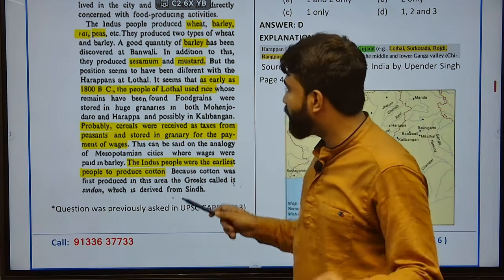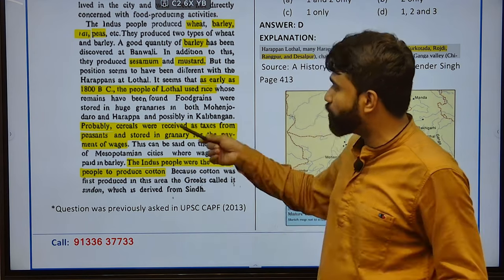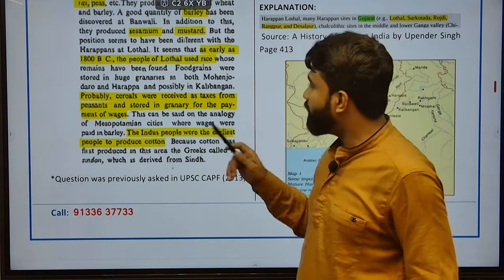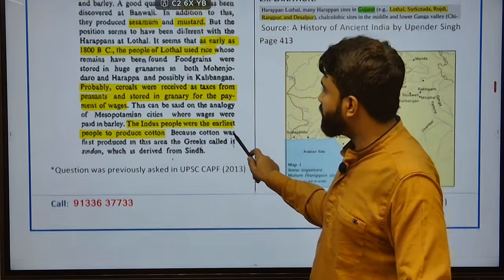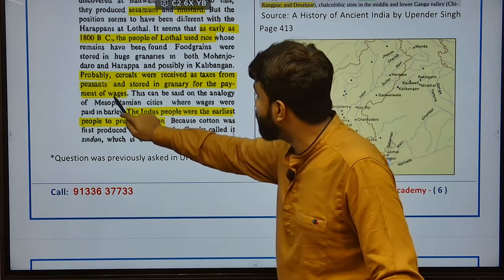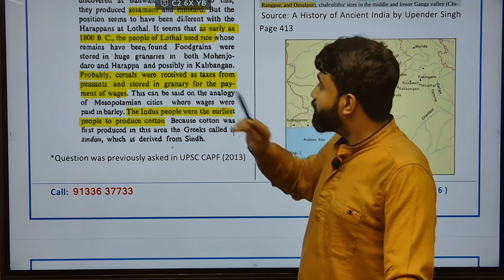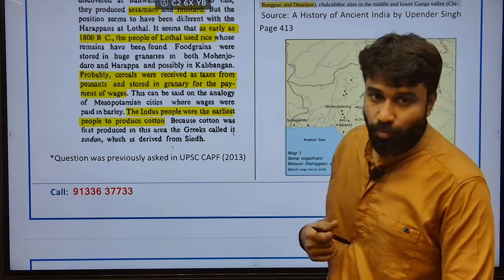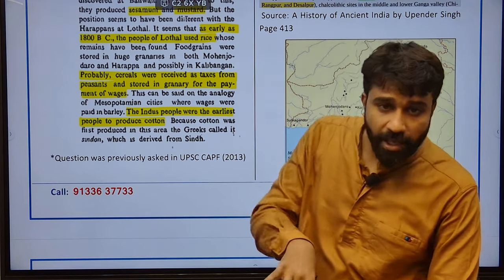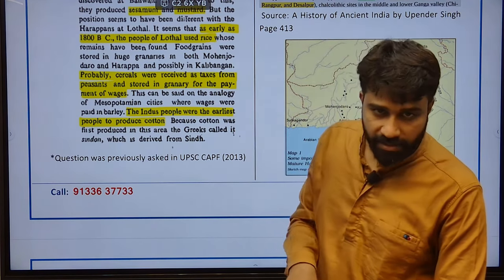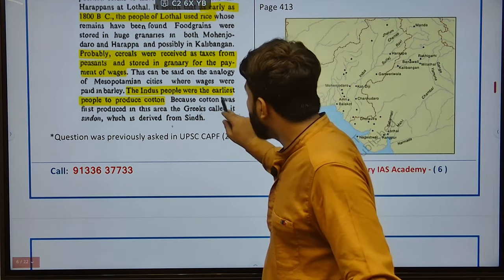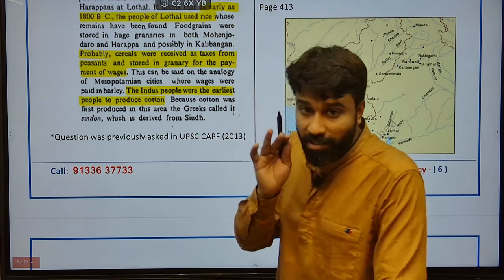Food grains were stored in huge granaries in both Mohenjodaro and Harappa and possibly in Kalibangan. Cereals were received as taxes from peasants or stored in the granary for payment of wages — probably, this was not clear evidence, but there might be a possibility of collection of tax. India's people were the earliest people to produce cotton — very important.